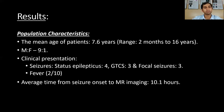Regarding population characteristics, the mean age of the patients was about 7.6 years, ranging from 2 months to 16 years of age, with a male predominance and a male to female ratio of 9:1. Clinically, status epilepticus was seen in 4 cases, generalized clonic seizure in 3, and focal seizures in 3 cases. Fever was seen in 2 of the 10 patients. The average time from seizure onset to MRI was about 10.1 hours.